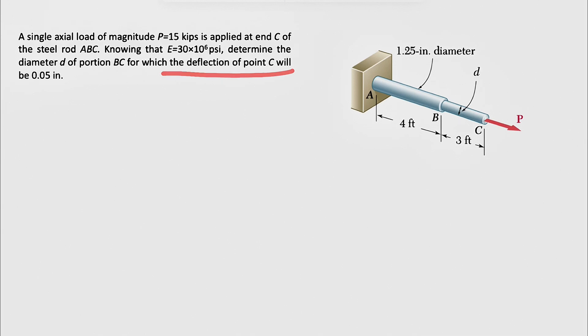So what we have here is the deflection of point C, which is going to be 0.05, and we know this is coming from two different portions. We're going to have the deflection of AB plus the deflection of BC, and that's going to give us the 0.05.